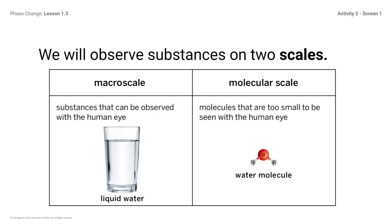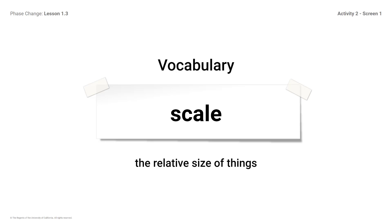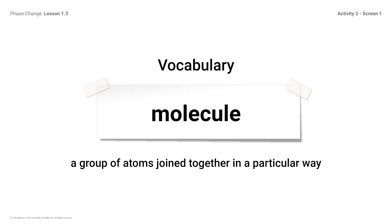In this unit, we will be studying substances at both the macroscale and the molecular scale. Vocabulary: Scale — the relative size of things. Molecule — a group of atoms joined together in a particular way.